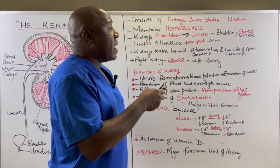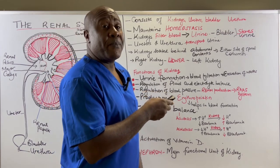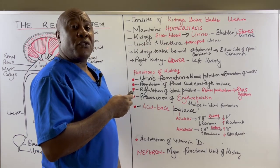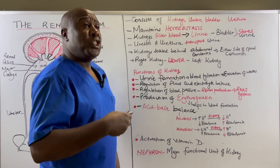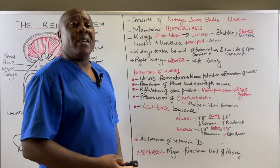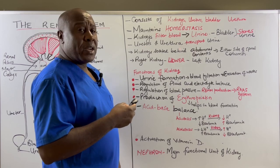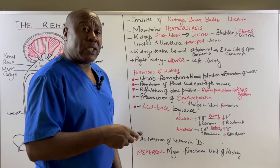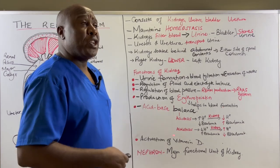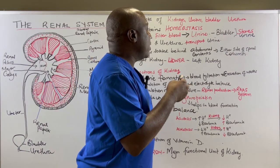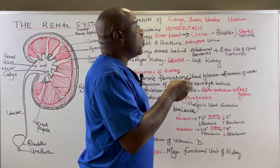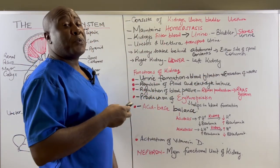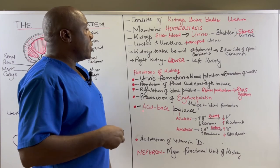So the bladder plays a role by storing this urine. On the other hand, the ureters and the urethra are involved in transporting this urine which has been formed in the kidneys. The ureters transport the urine from the kidneys to the bladder where it is stored for some time. And when it is time for this urine to leave our bodies, the urethra helps it to flow from the bladder to the outside of our bodies.